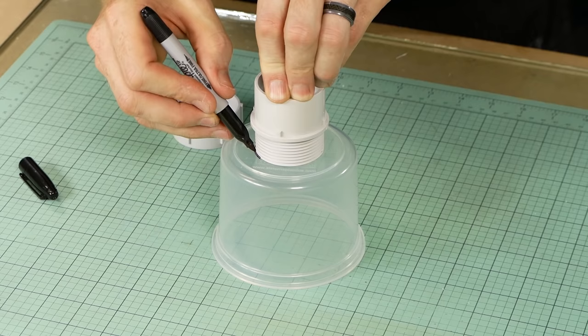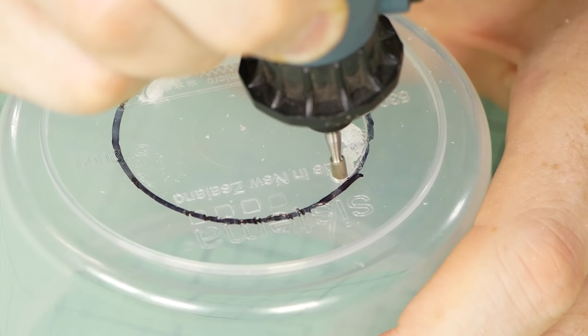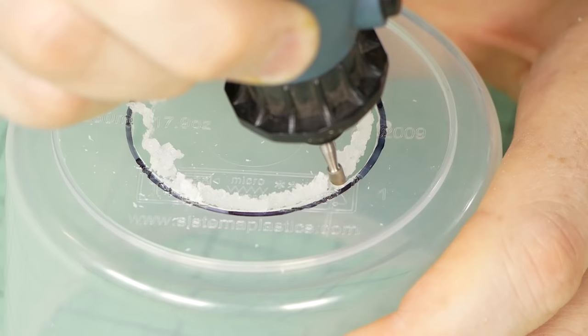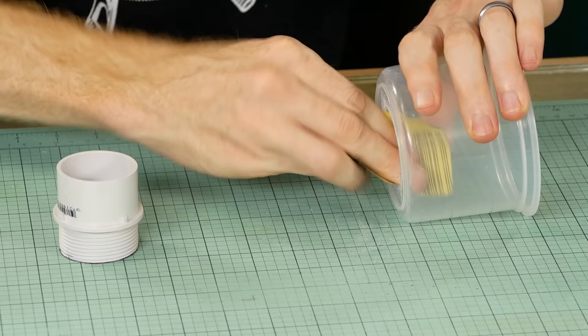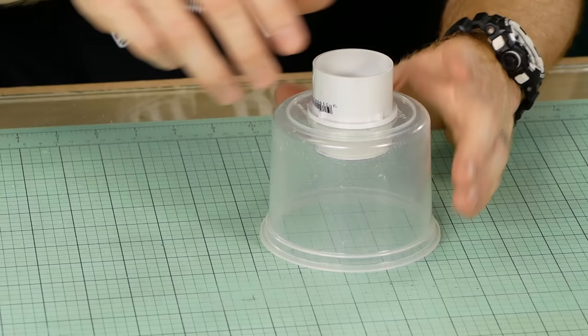Next, we need to cut a hole in the main part of the container, just like we did with the lid. Once I've traced the hole, I use the Dremel to carefully cut out the hole. I deliberately cut the hole slightly small because I want it to be a tight fit. With a small amount of sanding, it's a perfect fit.